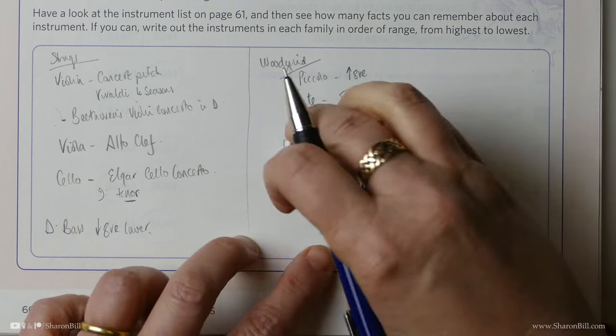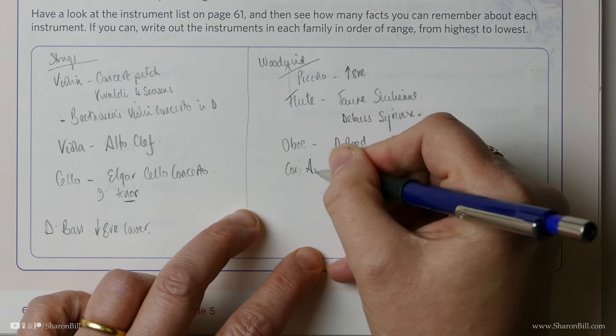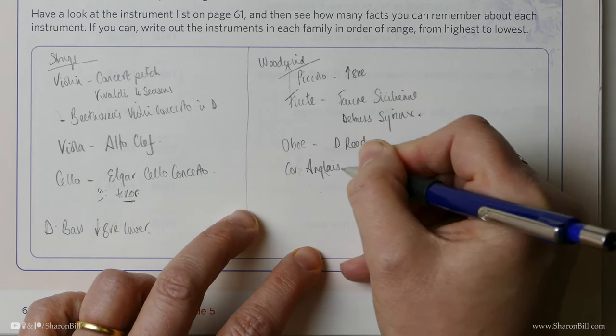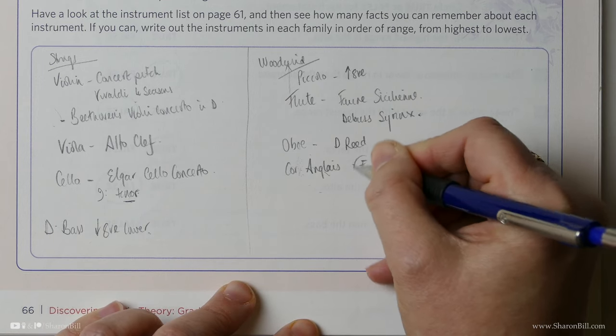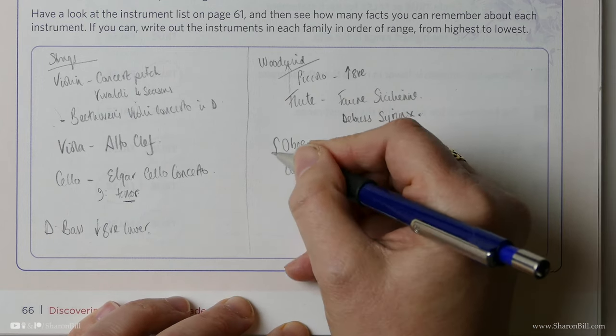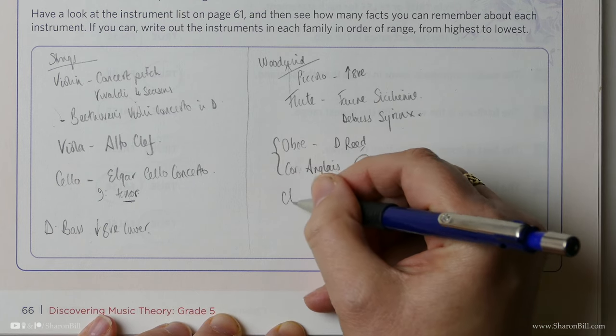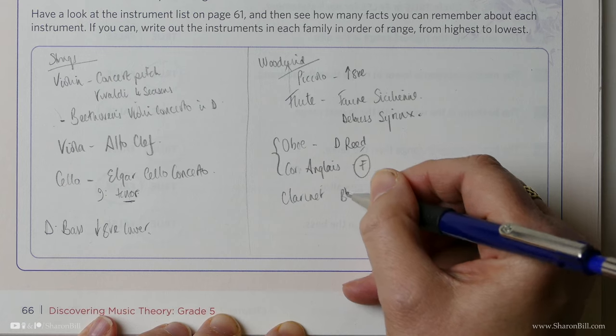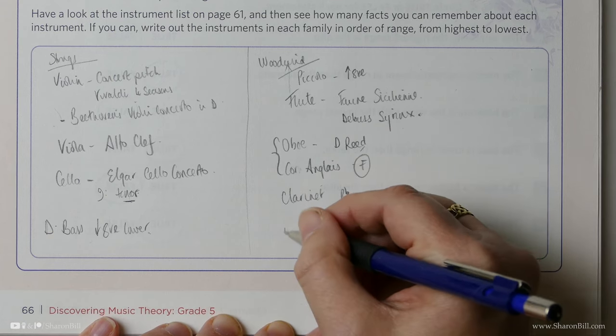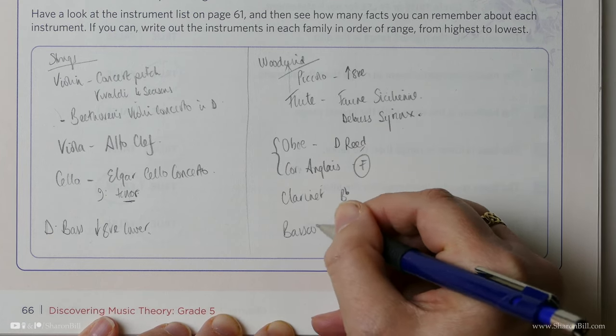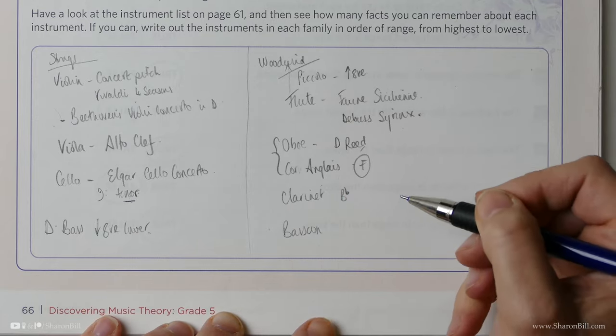Which is in F. They are related instruments. Then we have the clarinet, which is transposing to B flat. And then we have the bassoon, which is the base of the woodwind section. Let's do brass.